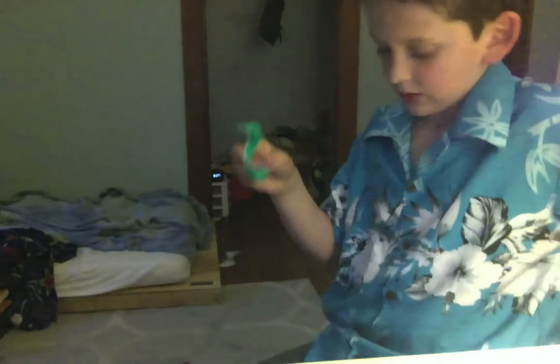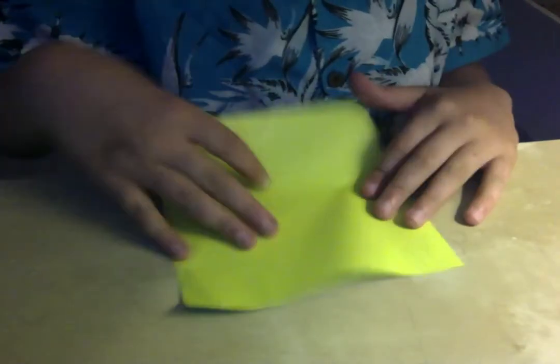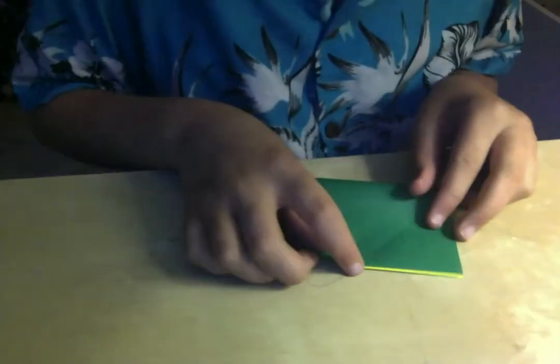This model is very simple. So I'm going to teach you how to fold it right now. For this model I'm going to be using a 6 inch square of kami paper. Start white side up and fold in half.